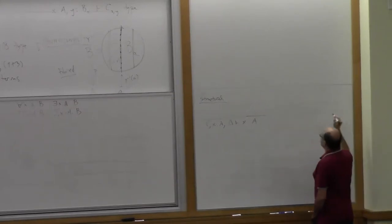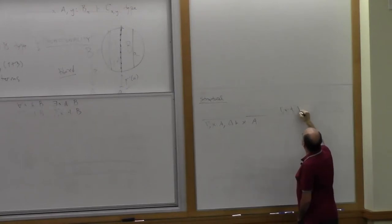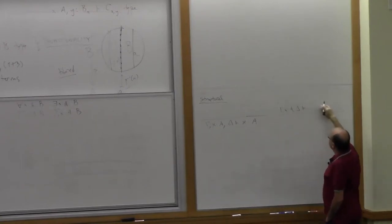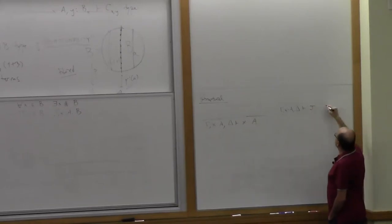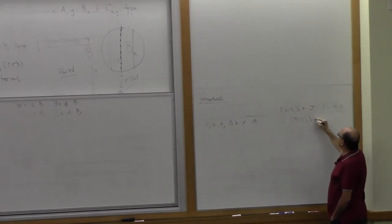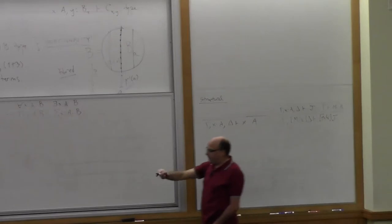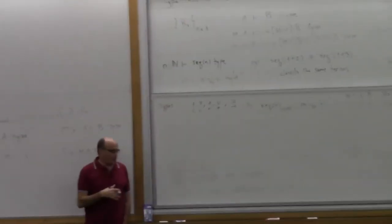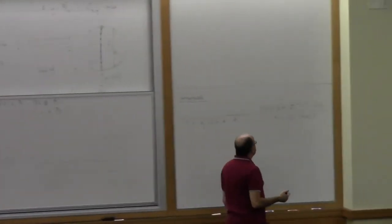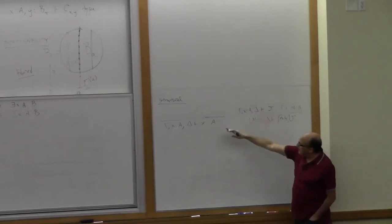The principle of substitution says: if x:Δ gives us a judgment J, and if we have an M which is of type A, then we can plug those into Δ and substitute M for x in J. I'm being a little loose here because J stands for any of these judgments — it could be a typing judgment or a type formation judgment. So I'm using a blackboard economy to explain things concisely, but really I mean a bunch of rules, one for each choice of judgment J.